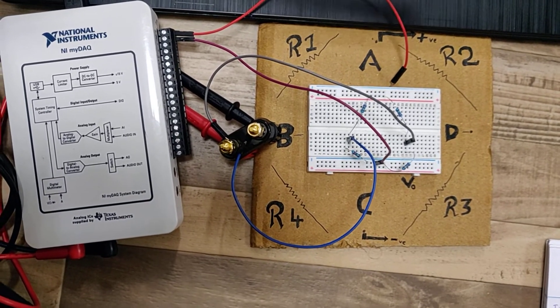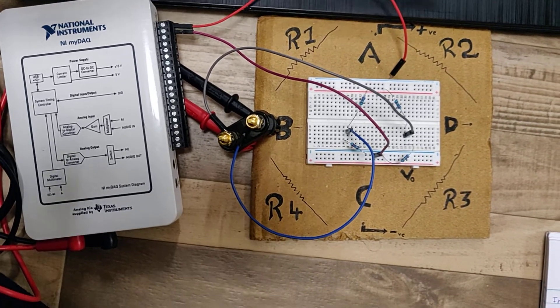Here in this circuit we have four resistors R1, R2, R3, R4.